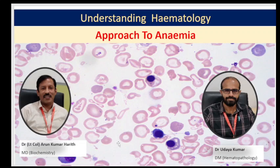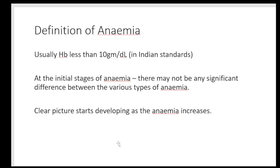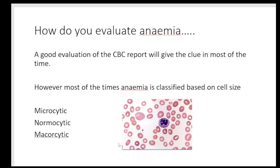In this lecture we are going to talk about the approach to anemias. The definition of anemia may be 11 or 12 in Western books, but in India if we look at a hemoglobin of less than 10 gram per deciliter we will start calling it anemia. In the initial stages all forms of anemia look quite similar and differentiation becomes difficult. Over time as the anemia develops, the picture becomes clear. Evaluating the CBC report carefully will in most cases give us the clue to diagnosis. Anemias are classified based on the size of the RBCs: microcytic, normocytic, and macrocytic.